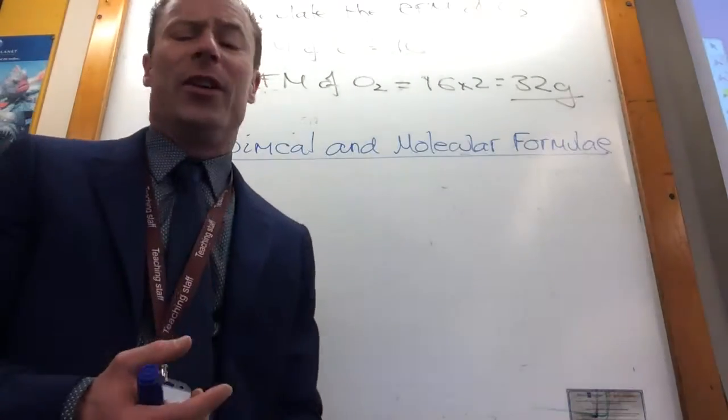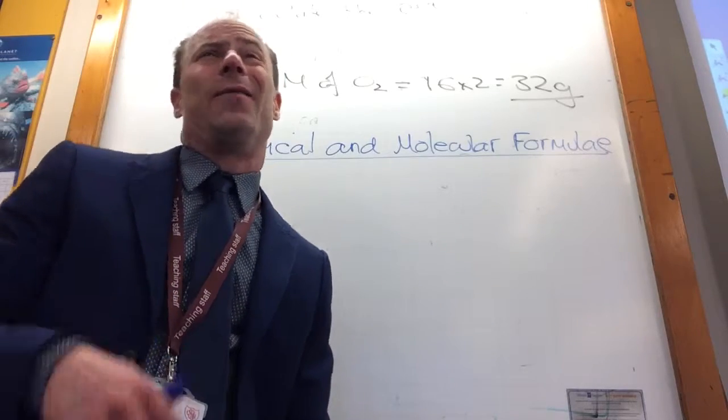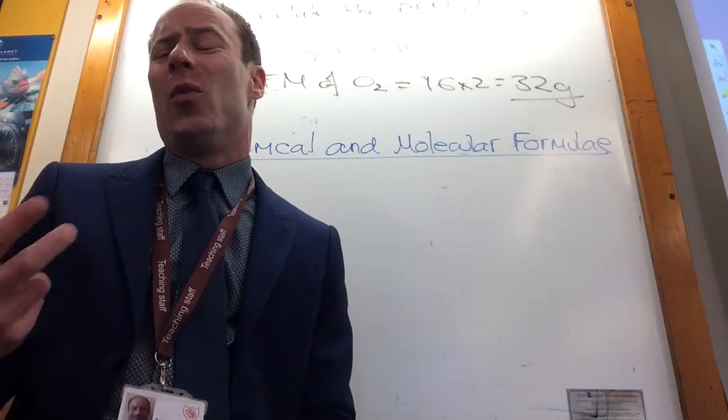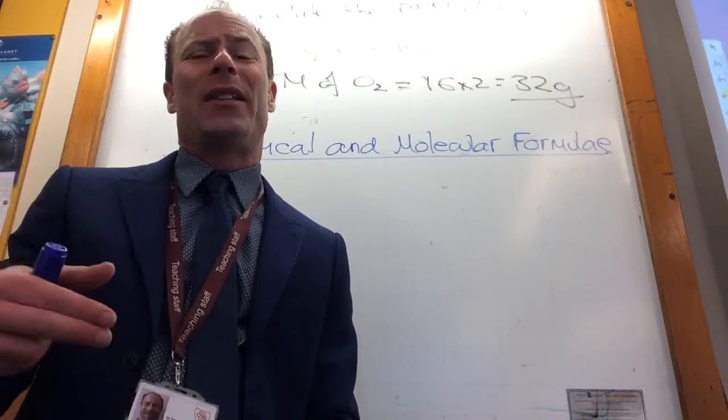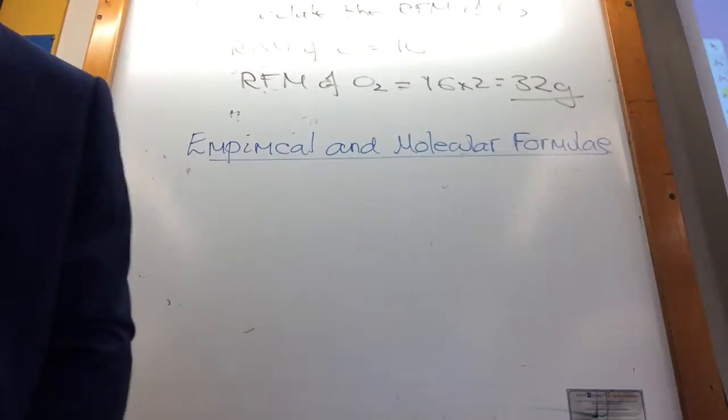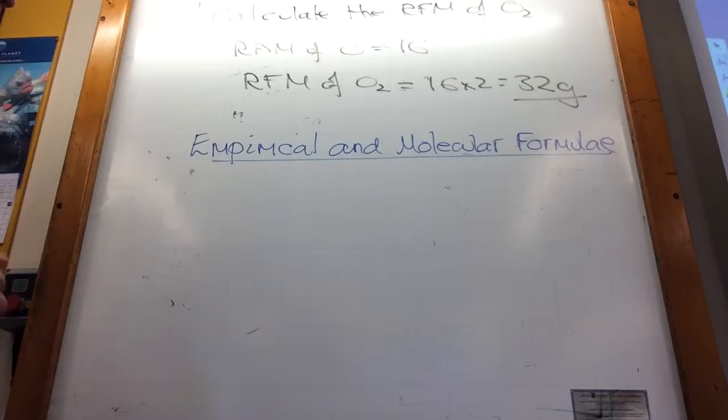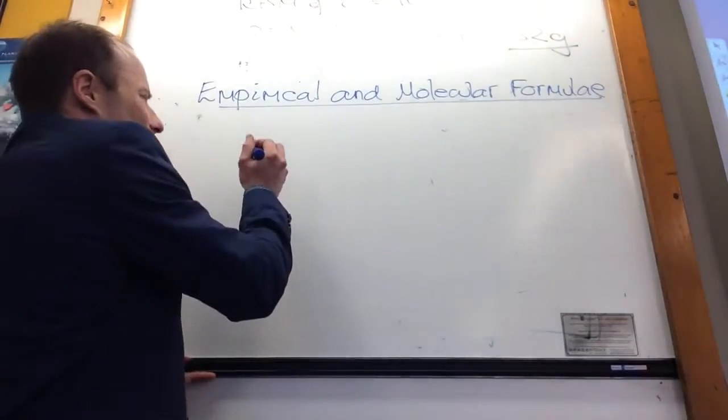So often what they'll give you is they'll tell you a compound contains, I don't know, 40 grams of sodium, 60 grams of oxygen. What's its formula? As long as you stick to this basic method, you will be fine and dandy. So let's have a look. What is an empirical formula? An empirical formula is the simplest ratio between the atoms.